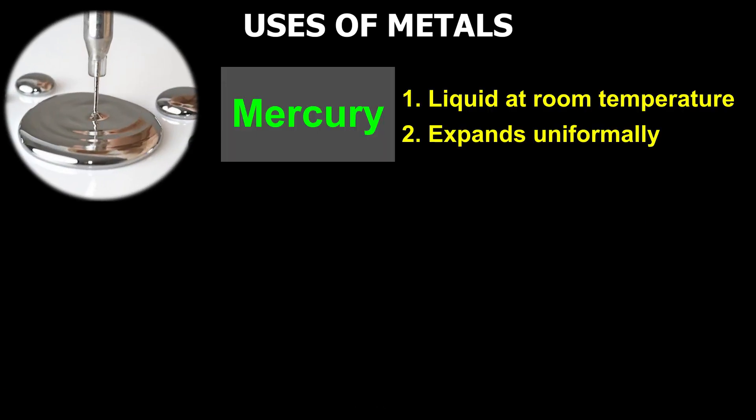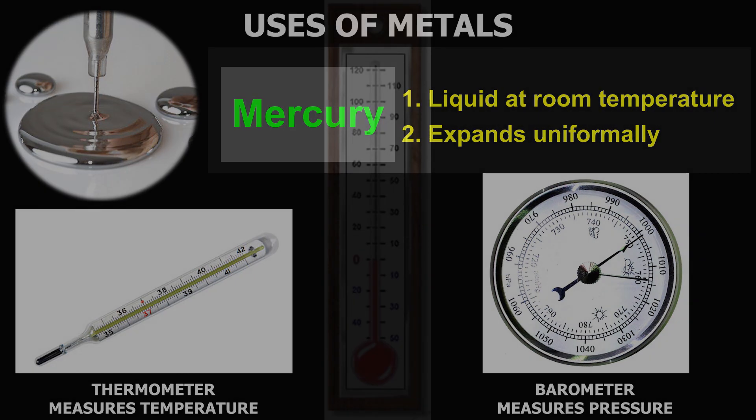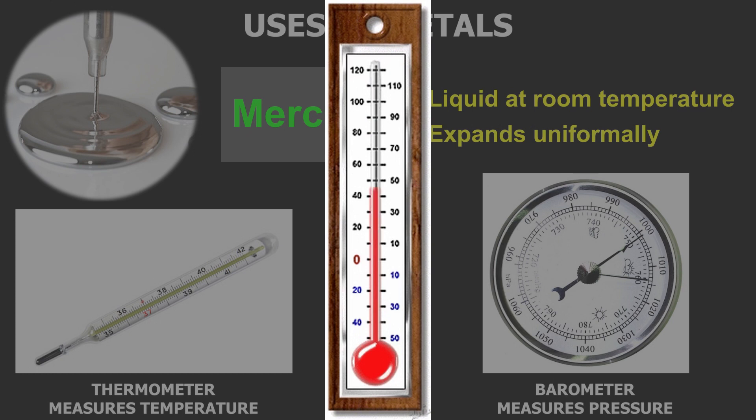Mercury is liquid at room temperature and changes uniformly with the rise in temperature. This property makes it useful in thermometers and barometers. Thermometers measure temperature whereas barometers measure atmospheric pressure. When temperature or pressure rises, mercury expands and rises in the thermometer or barometer.